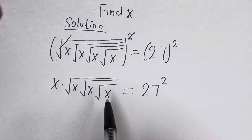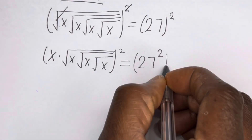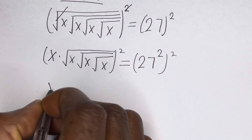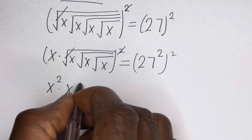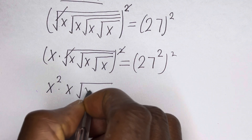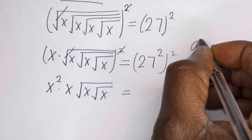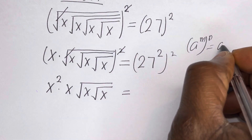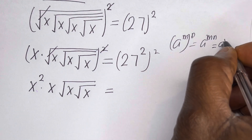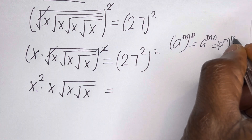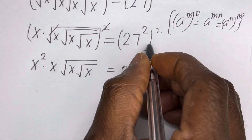Let us square both sides of this equation again. This will be S squared, multiplied by this — cancel this. We have S, square root of S, square root of S, is equal to — if you have A to power M, to the power of N, is equal to A to power M times N — and this will be 27 raised to power 4.